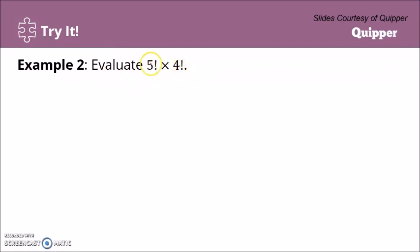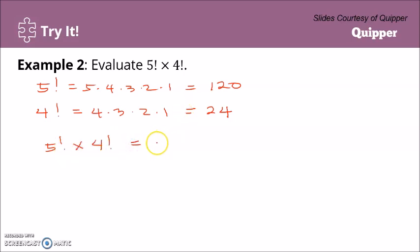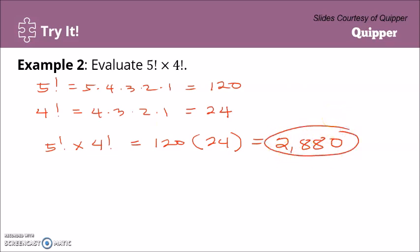Another example: evaluate 5! times 4!. Five factorial equals 5 times 4 times 3 times 2 times 1. Four factorial equals 4 times 3 times 2 times 1. Solving this: 5 times 4 is 20, times 3 is 60, times 2 is 120, times 1 is 120. Four factorial: 4 times 3 is 12, times 2 is 24, times 1 is 24. So 5! times 4! equals 120 times 24, which equals 2,880.